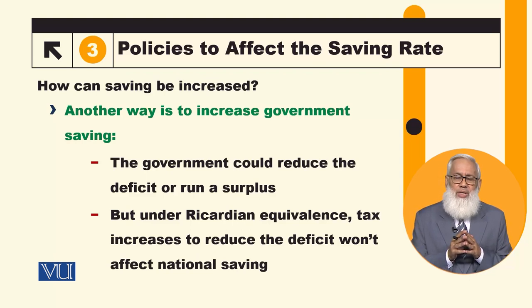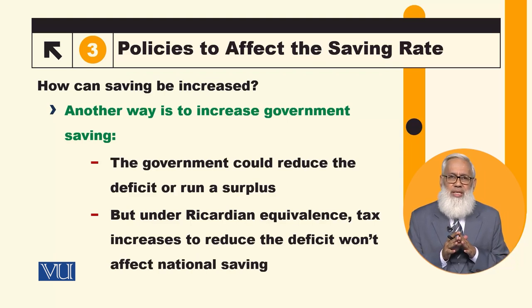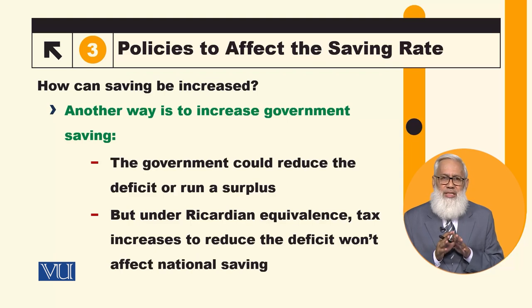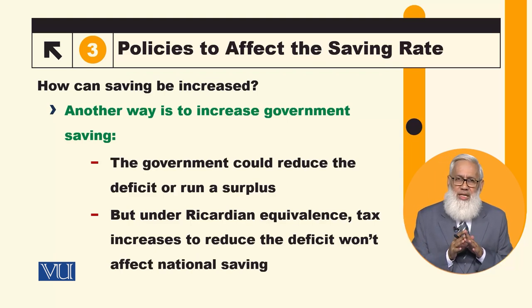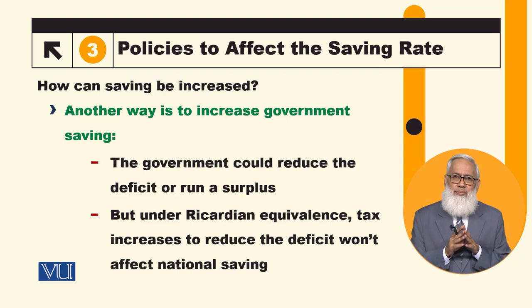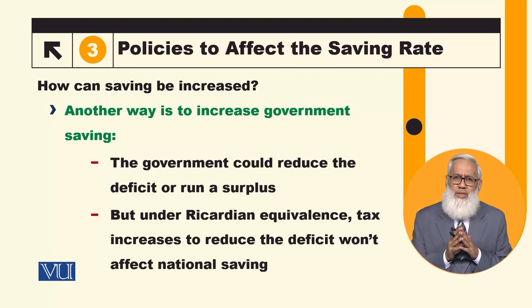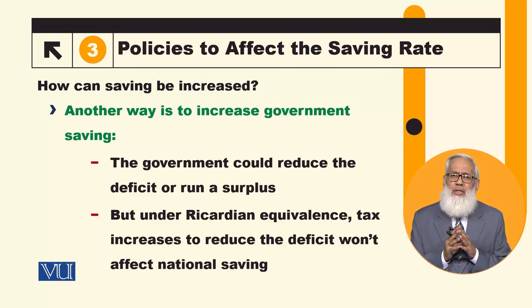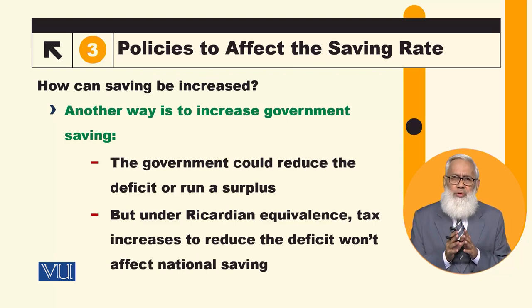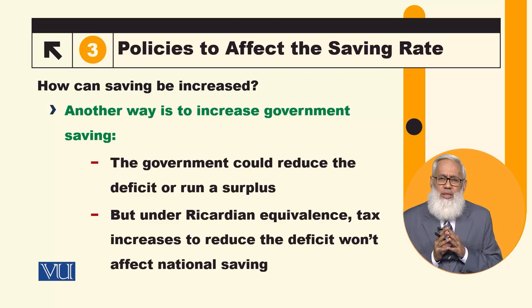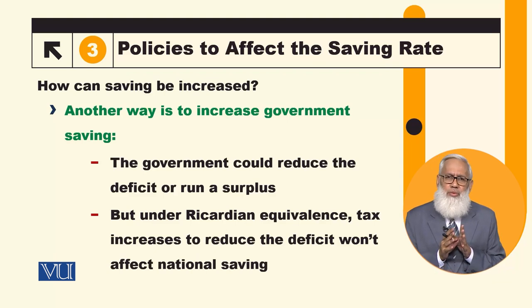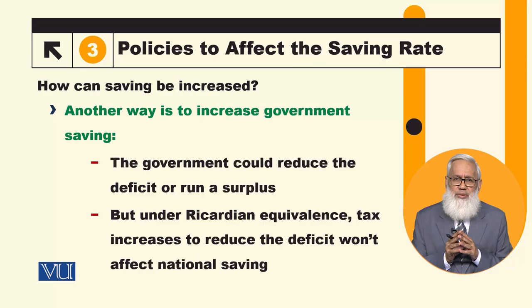People who are far-sighted and rational understand that government expenditure increases costs, and they accordingly adjust their own saving and consumption. So we have understood that the government's role in influencing saving has limitations. Thank you very much.